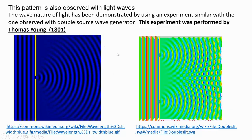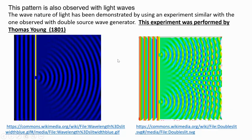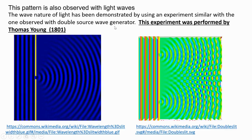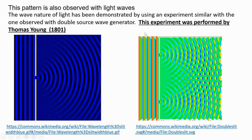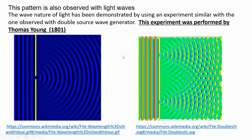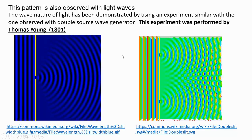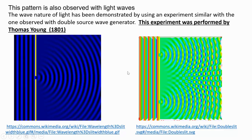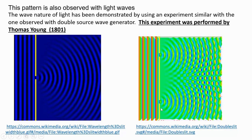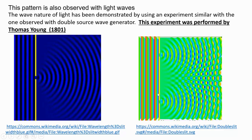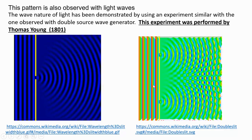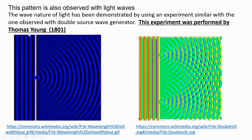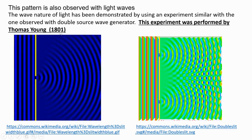This pattern is also observed with light waves, and the wave nature of light has been demonstrated by using an experiment similar to the one observed with the double-source wave generator. In this case, we use a double slit or two openings. This experiment was performed by Thomas Young in 1801.